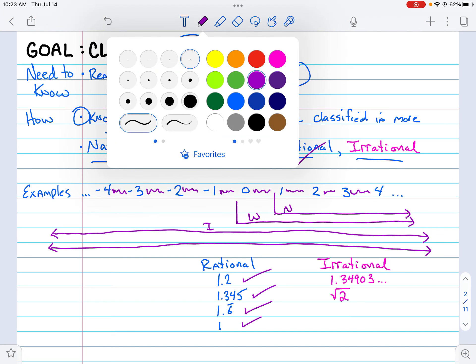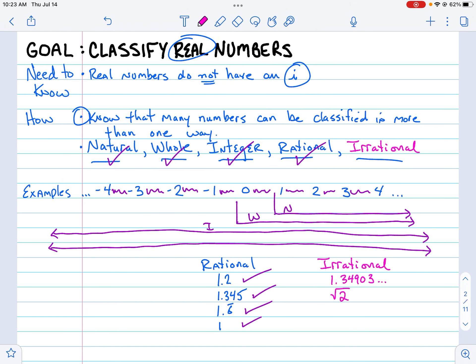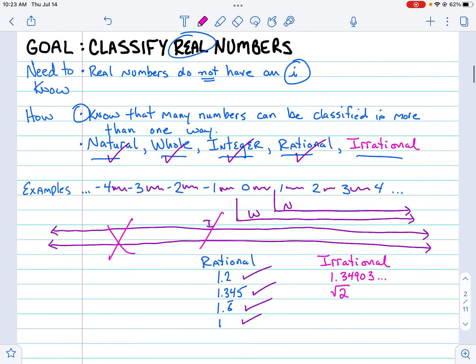Now, if we switch to irrational—irrational numbers are not in any of these things. It's important to note that if you have an irrational number, it is never natural, whole, integer, or rational. If it's irrational, it's only irrational, and you could maybe argue that it's real as well. So irrational is its own thing.